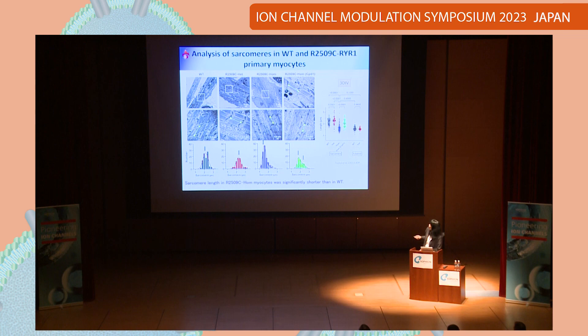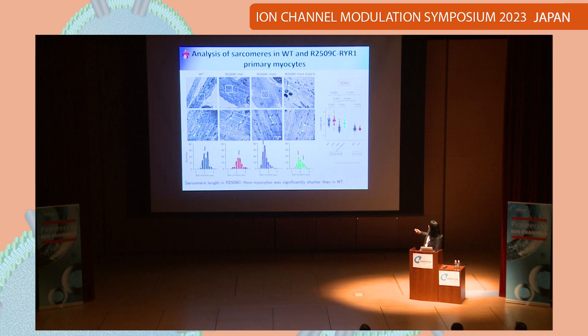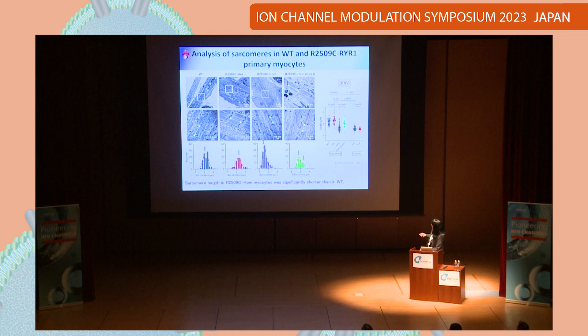Next, we examined the microstructure using electron microscopy. The lower panel shows the typical structure of skeletal muscle — A band, I band, and Z-line. We measured sarcomere length, the distance from Z-line to Z-line. Normal sarcomere length is reported at around 2 micrometers. Surprisingly, in homozygous myocytes, sarcomere length is significantly shorter than in wild type. If a RyR1 inhibitor is present, it partially recovers sarcomere length.